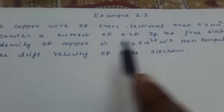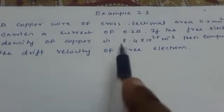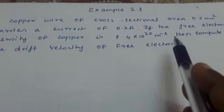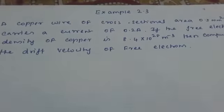If the free electron density of copper is 8.4 × 10²⁸ per meter cube, then compute the drift velocity of the electron.